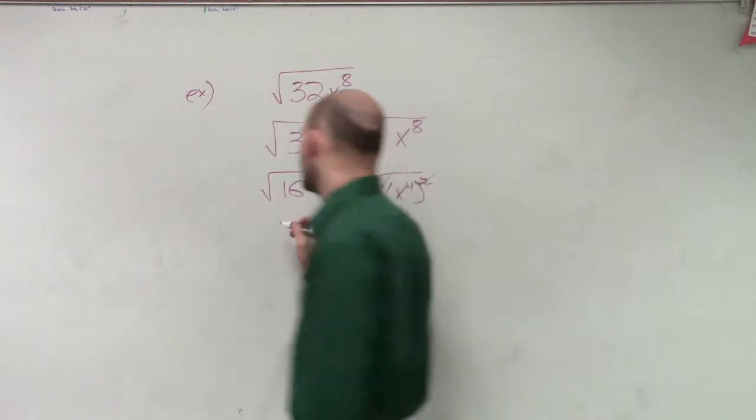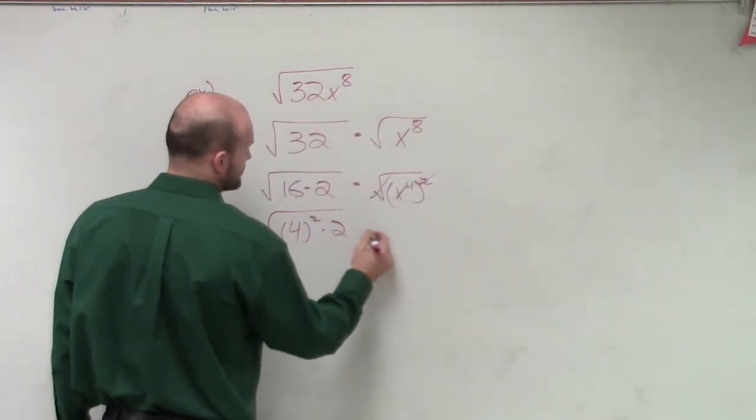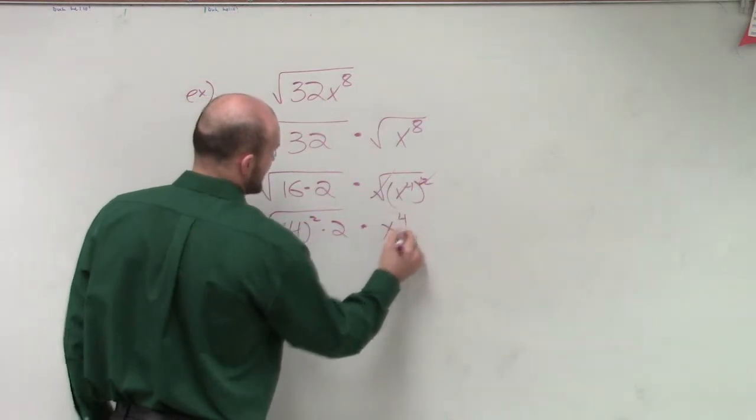Therefore, over here, I can now rewrite this as 4 squared times 2. And this is going to be x to the fourth.